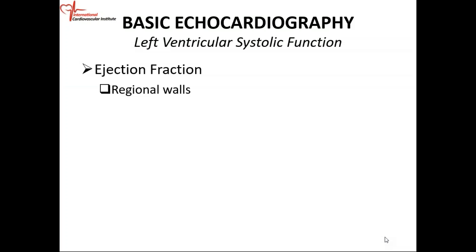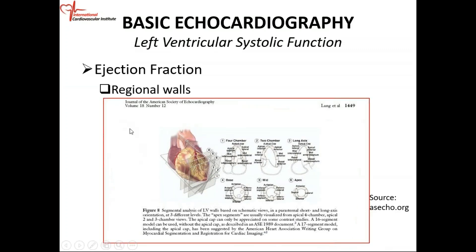So, let us quickly recap the regional walls. Let's do the short axis first. If the heart is laid down flat, and we bread loaf it from the apex to the base, the apex will look something like this. The mid-cavity looks something like this, and the base will look like this.